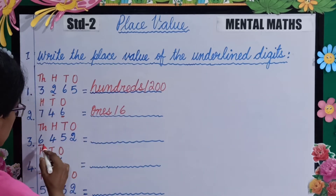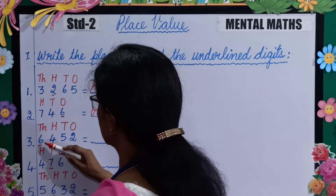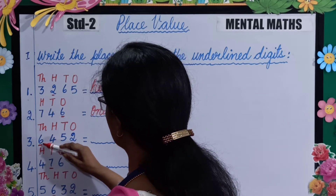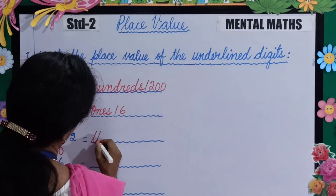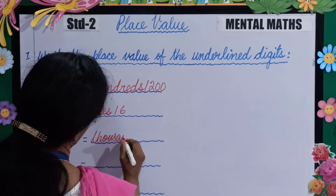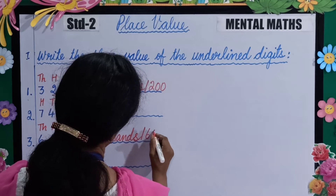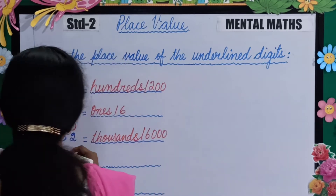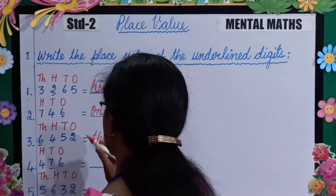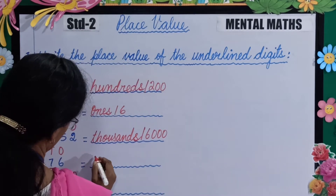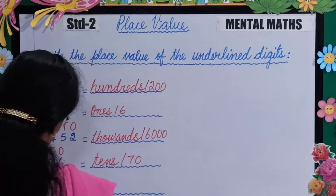Next is 6452 — which number is underlined? 6 is underlined. What is the place value of 6? 6,000. So you will write here thousands or 6,000. Next, 476 — what is the place value of 7 in this number? Tens. Very good. So you will write here tens or 70.